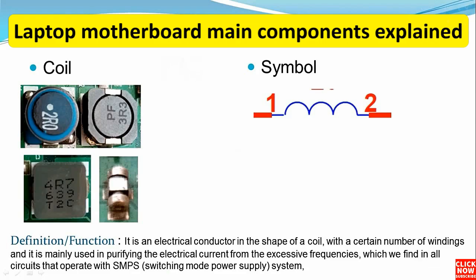The next component is the inductor or coil. There are many types of coils in computer and laptop motherboards — you can find various form factors, but all of them are inductors. This is the symbol for an inductor; it has two terminals. Basically, the inductor is just a wire or a winding. If you test it using a multimeter, you will get a continuity — that means the inductor is good. If you get no continuity, the inductor is bad or broken.